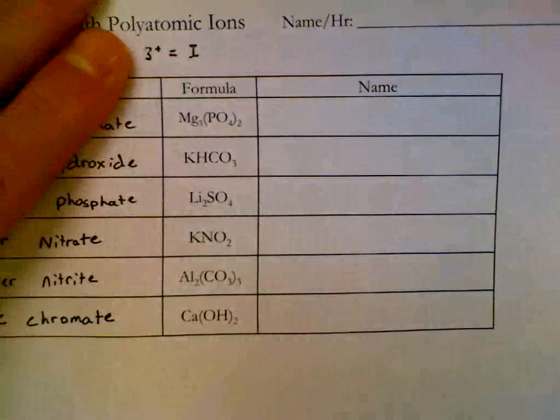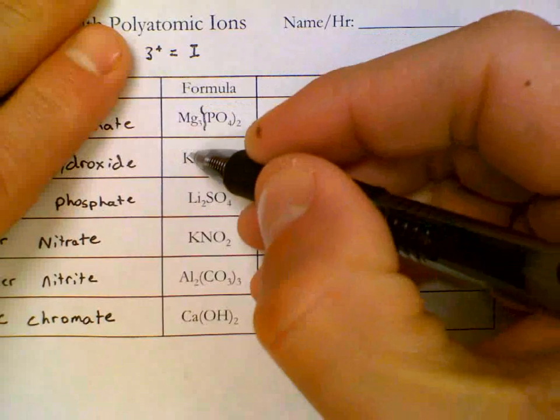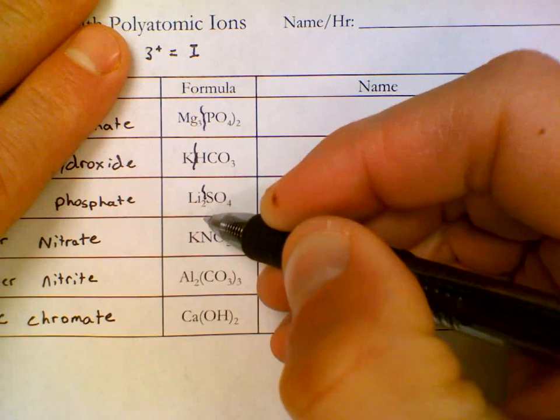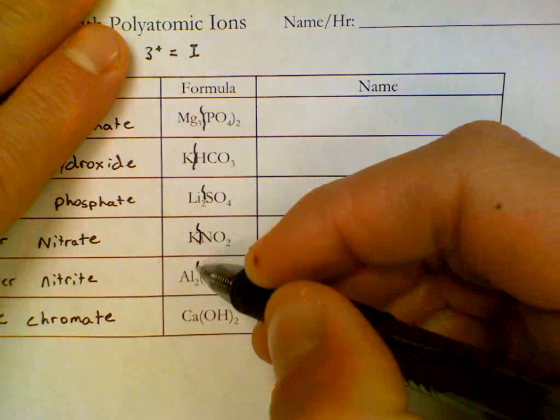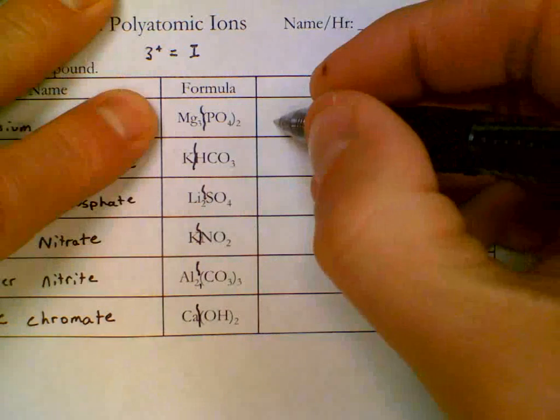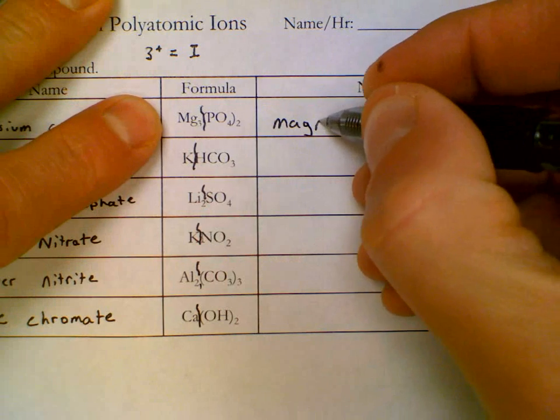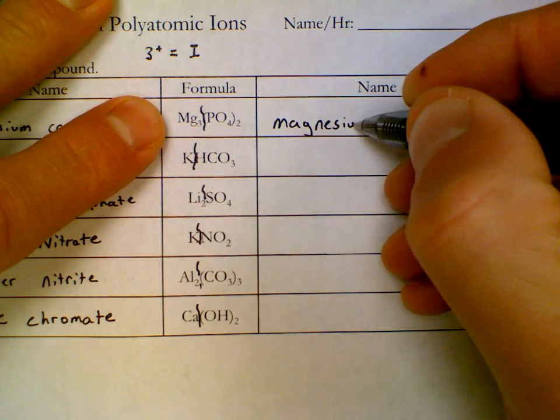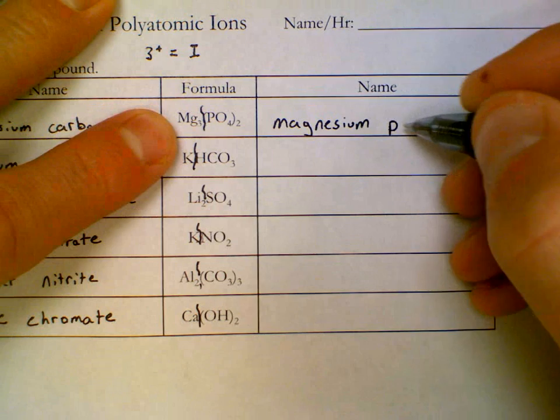Being able to recognize where atoms are is very important, where a symbol starts and ends. Mg is magnesium, full first name on those metals. PO₄ is called phosphate.